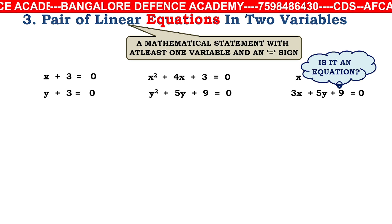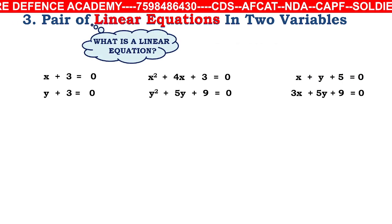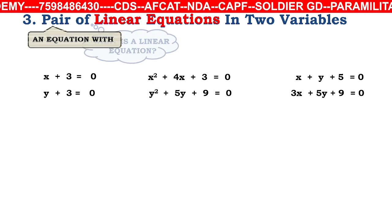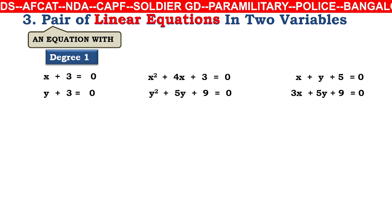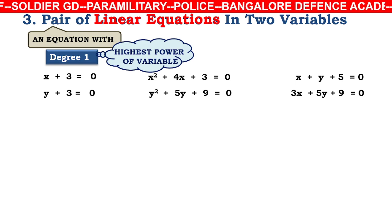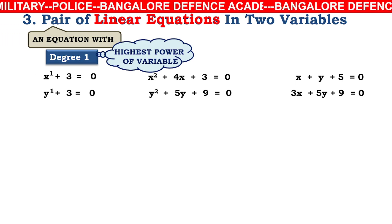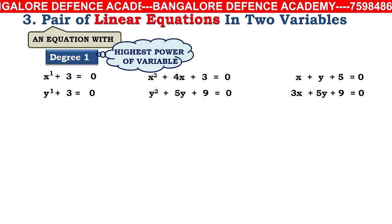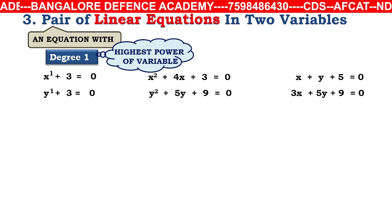What is the difference between these equations? Linear means an equation with degree 1. The highest power of variable x is 1 and the highest power of variable y is 1, so the degree is 1 — that's why it is called a linear equation. We are going to study linear equations with two variables.